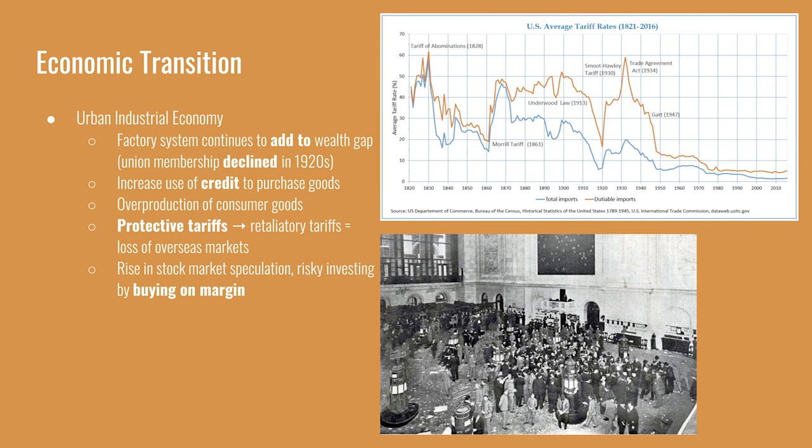Union membership declined in the 1920s; unions weren't very popular in the laissez-faire environment of the decade. American consumers were becoming more comfortable using credit to purchase goods. There was an overabundance of consumer goods, and to make them easier to buy, producers allowed consumers to buy on installment plans. Consumers overextended themselves, paying off debts for long periods of time — everyone wanted a car, a washing machine, a refrigerator, and financing plans made it easy to get them now and pay later.